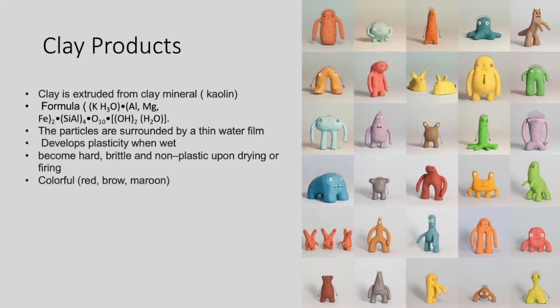The particles are surrounded by a thin film of water that, when it gets wet, develops plasticity and is easy to shape in any type of form that we want. When we dry it and apply heat, the materials become hard, brittle, and not plastic and will keep its shape forever.